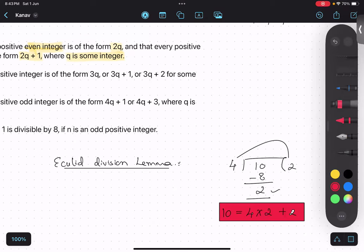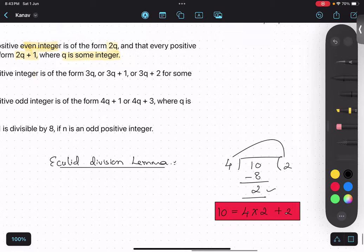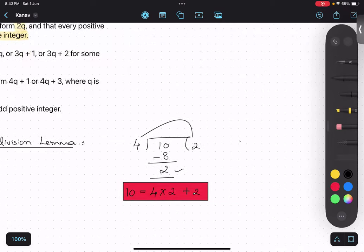So the same rule, if I apply and write in this form: a for andar, b for baha. Okay, this is quotient and this is the remainder. So a equals to bq plus r.